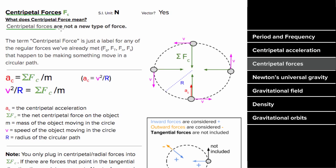Centripetal forces are not a new type of force. They are just existing forces that happen to point toward the center of the circle, making an object travel in a circle. For a moon going around the Earth, gravity is the centripetal force. For a yo-yo on a string, the tension is the centripetal force. For a skateboarder doing a loop-de-loop, the normal force is the centripetal force. For a car going around a roundabout, the static frictional force is the centripetal force.